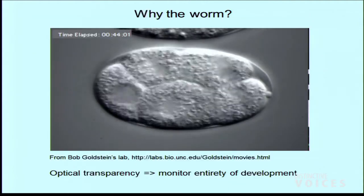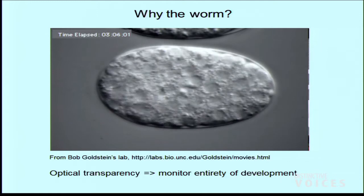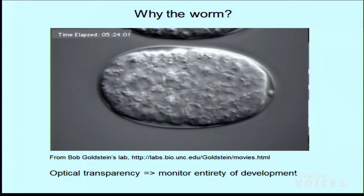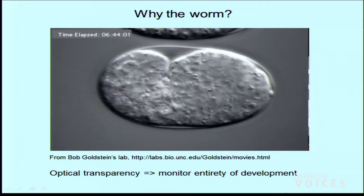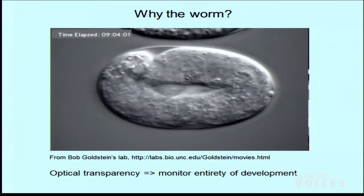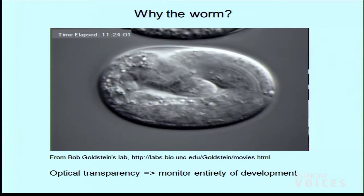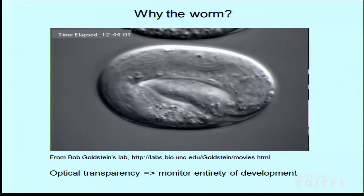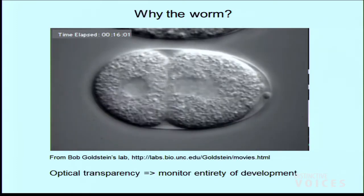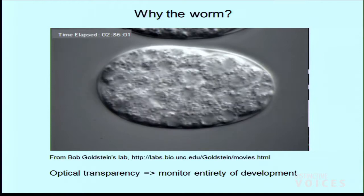Let me go into more detail about why the worm embryo is such a good system. One thing is it's transparent. This is a movie of a developing C. elegans embryo taken with a microscope you might find in a high school lab. Each individual blob is one cell, and just using this simple microscope you can see morphologically how the animal changes from a two-cell embryo to something that starts to look like a worm, and you can see these things hatch after about 13 hours. Optical transparency is a big deal — we can't look through a fish, fly, or mouse without light scattering being a problem, but in the worm we can look all the way through.